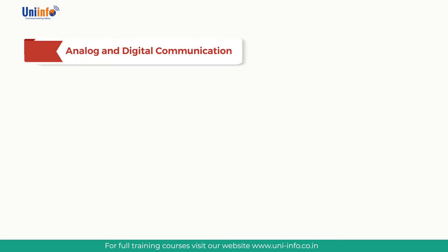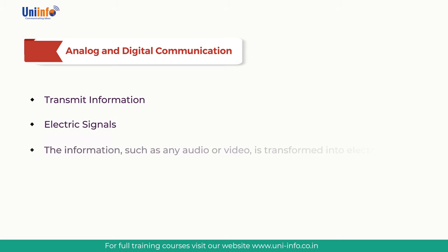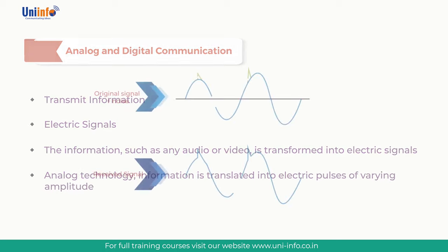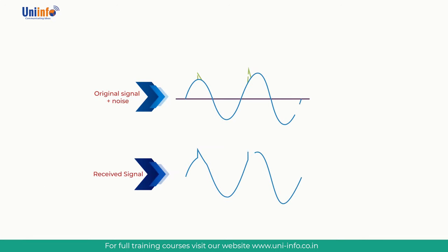Now let us learn about analog and digital communication. Analog and digital signals are used to transmit information, usually through electrical signals. In both technologies, information such as audio or video is transformed into electrical signals. The difference between analog and digital technologies is that in analog technology, information is translated into electric pulses of varying amplitude.